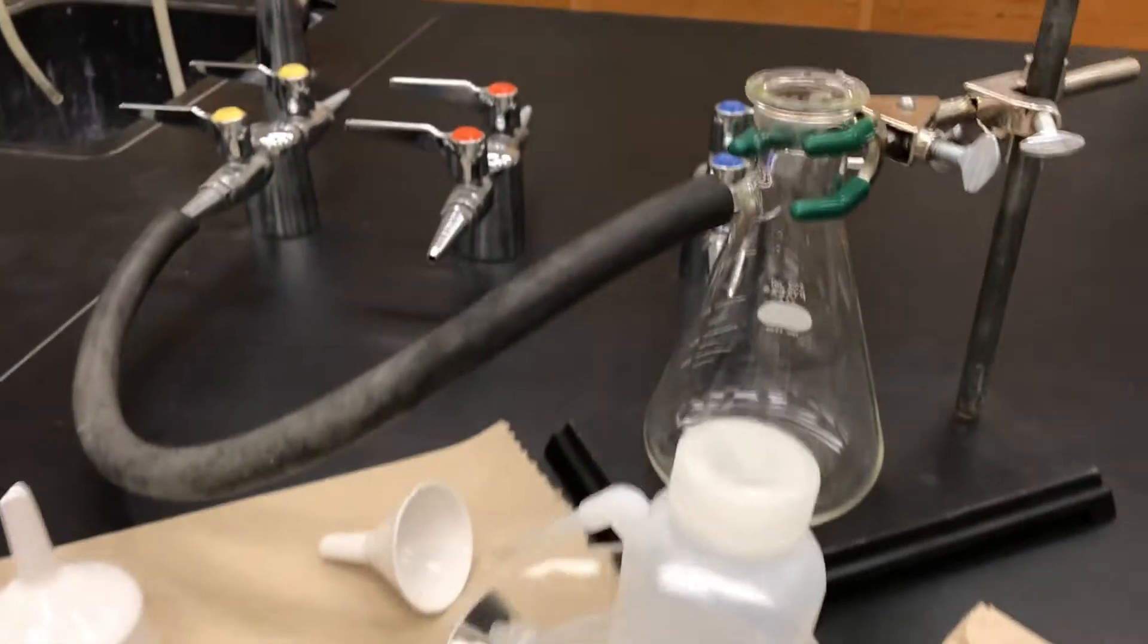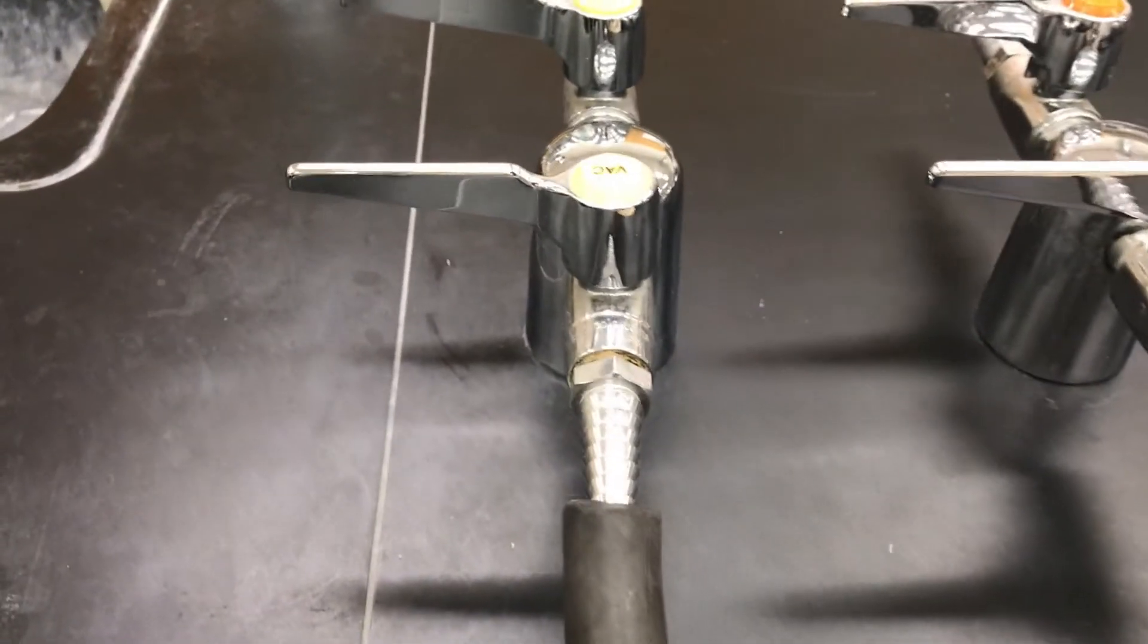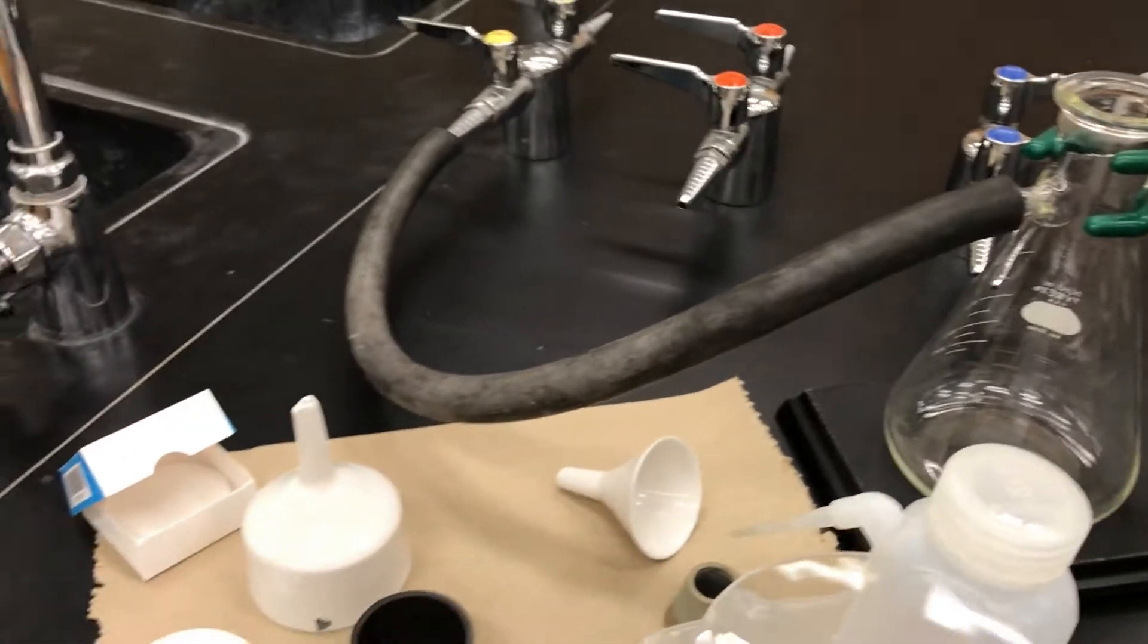So let me set up my filtration apparatus. I'll connect a filter flask to a ring stand and then use a thick rubber tubing to connect the sidearm to the house vacuum.